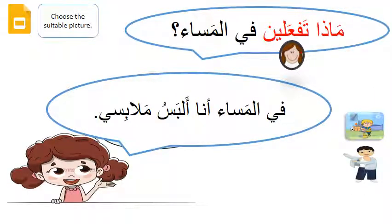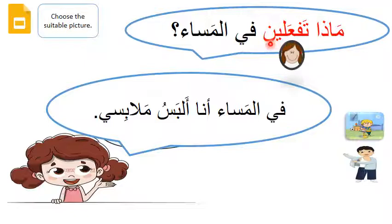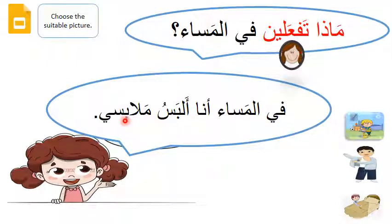الآن أسأل بنت — now I'll be asking a girl. ماذا أقول — what do I say? ماذا تفعلين في المساء. Always note the difference between تفعل وتفعلين — if the verb ends in ين it means I'm asking a girl. The girl is saying: في المساء أنا ألبس ملابسي — in the evening, I put on my clothes. Pause the video and choose the suitable picture according to the girl's answer.